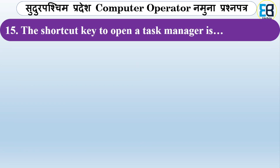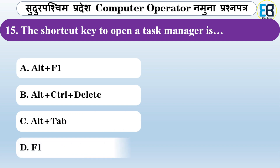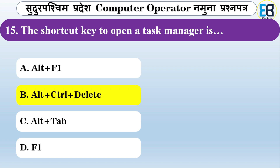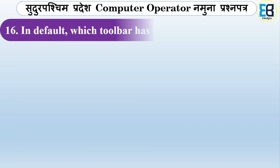What is the shortcut key to open Task Manager? Options are Control+Delete, Alt+Tab, F1, or Ctrl+Alt+Delete. The correct answer is Ctrl+Alt+Delete — that is the shortcut to open Task Manager.